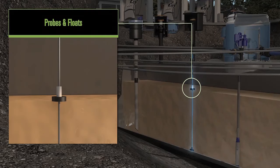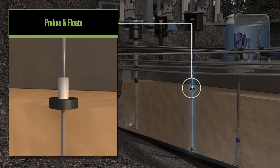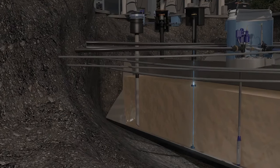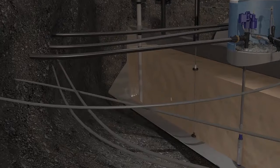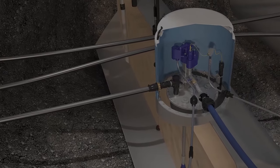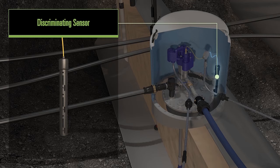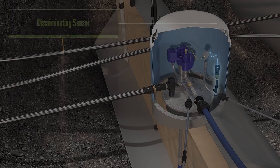Probes work with floats inside the underground storage tank to communicate the level of fuel and presence of water back to the automatic tank gauge. Sensors are placed inside containment areas and the space between the double layer of pipe and containment area called the interstitial space and communicate the presence of liquid where it's not supposed to be.